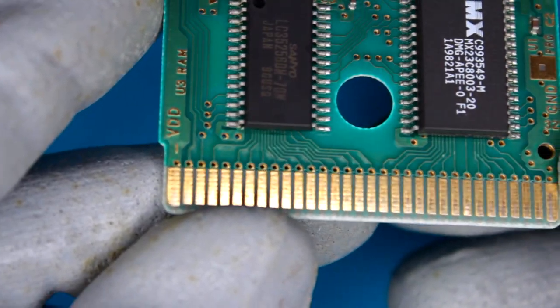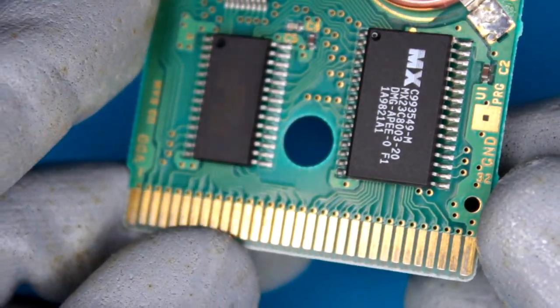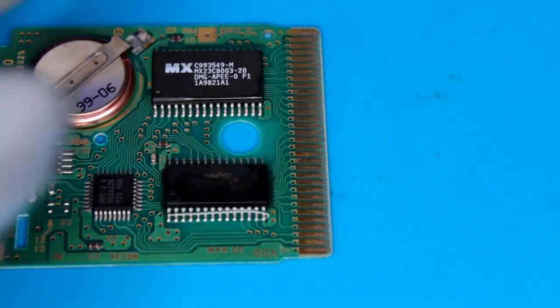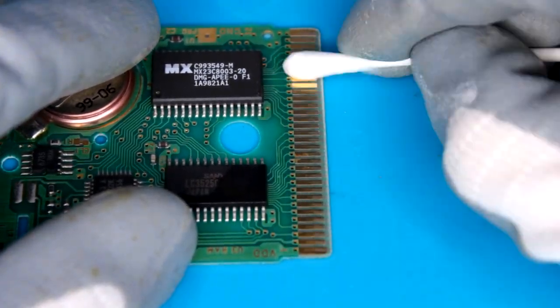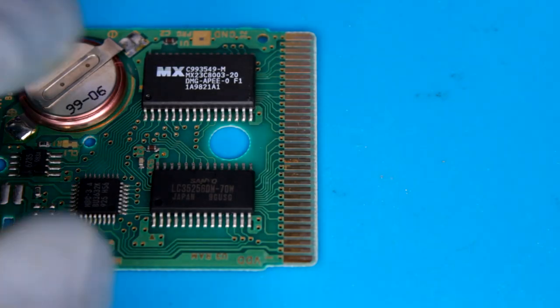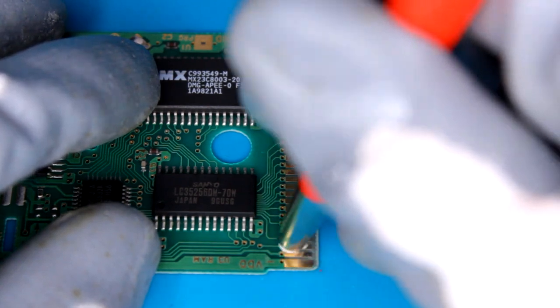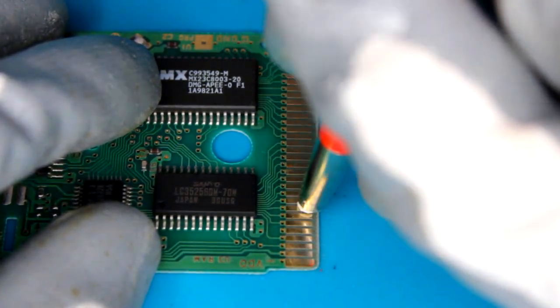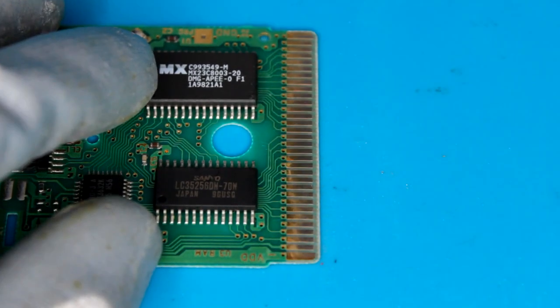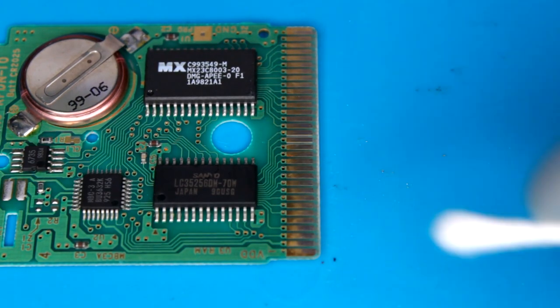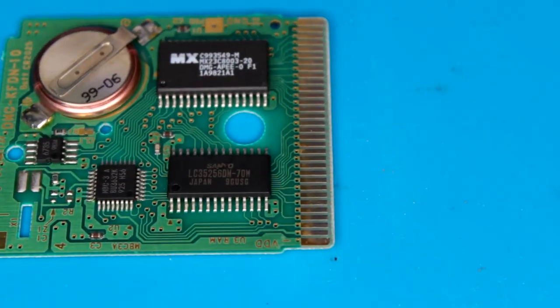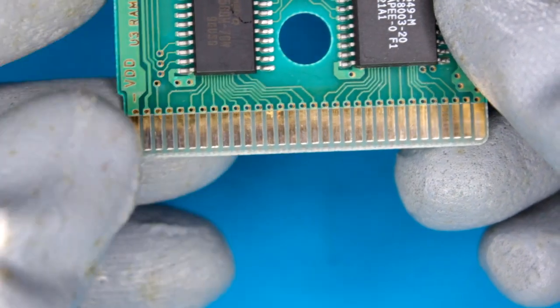The first thing I'm going to do is I'm going to clean the contacts because normally that is what the cause is of this weird freezing. So to do that I'm going to use a combination of IPA and contact cleaner. Disgusting. I also like to go for these contacts with a fiberglass pen. So now the contacts look a lot cleaner.